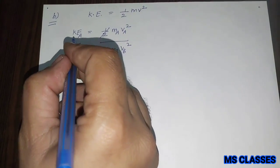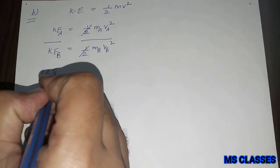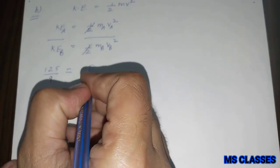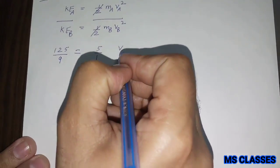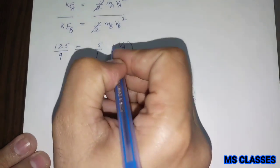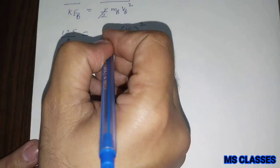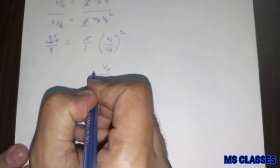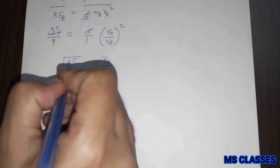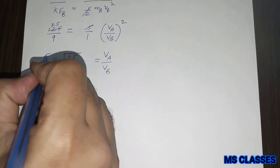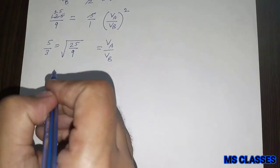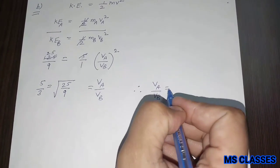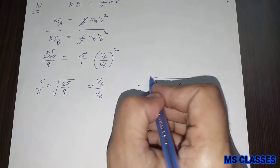If we divide both equations, the kinetic energy for the first and second body that ratio is 125 by 9, and the ratio of their masses are also given 5 is to 1, and this is VA upon VB whole square. If you take the square root, you get VA upon VB that is the square root of 25 by 9, which is 5 by 3. So the ratio of their velocities is 5 by 3.